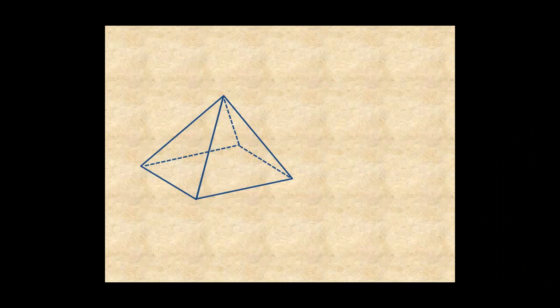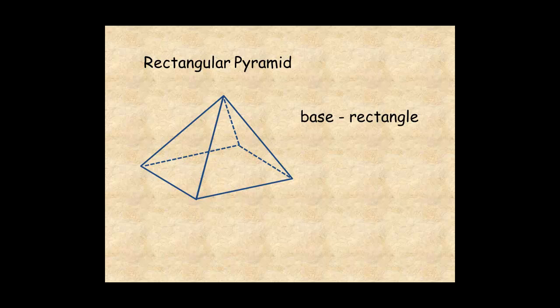Here's an example of a rectangular pyramid with a rectangular base. It unfolds into a net with a rectangle and four triangles.